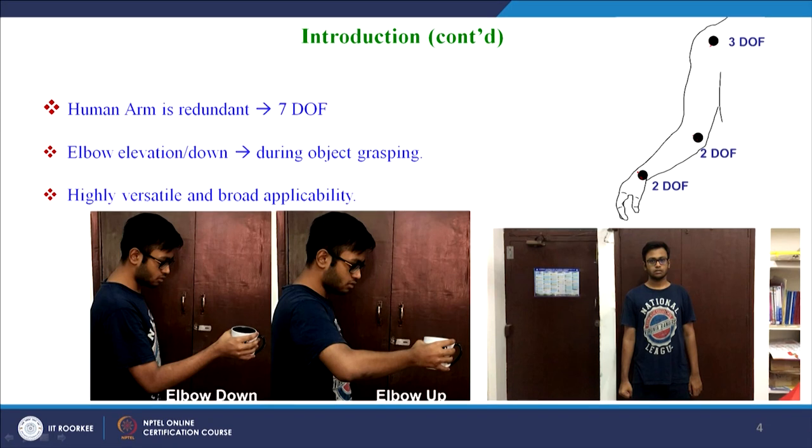For example, if you want to grasp an object, the task will have two sub-tasks: one is the positioning of the hand and another is the orientation of the hand. For positioning we need three degrees of freedom and for orientation we need three degrees of freedom, so we have one extra degree of freedom from the human arm which is redundant. For example, in the grasping case we have the redundant configuration shown by the elbow elevation angle — we have elbow down with which we can grasp an object, and similarly we can grasp the same object position with the elbow raised up, giving us the elbow elevation angle.